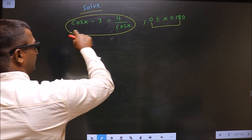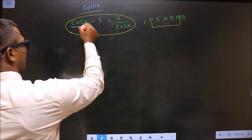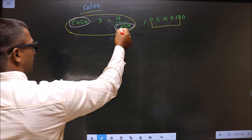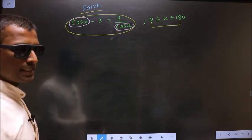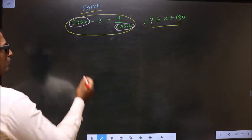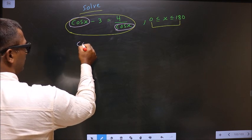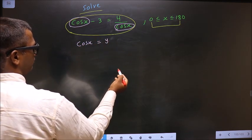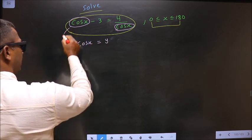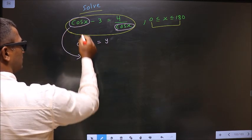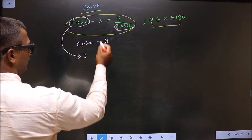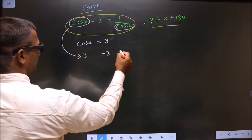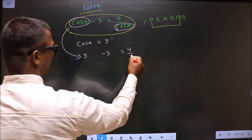Now, in this equation cos is present in two places. So instead of writing cos x every time, what I do is I take cos x to be some other letter, let us say y. Now this equation will change to: in place of cos x you put y minus 3 equal to 4 by y.